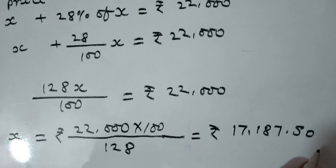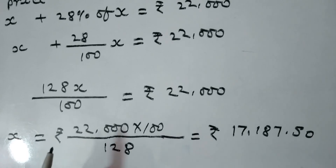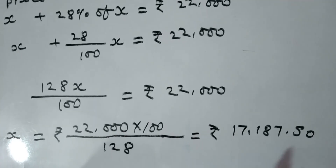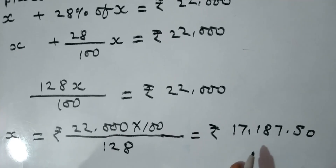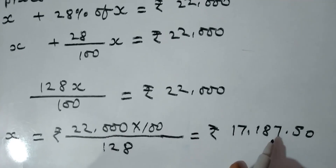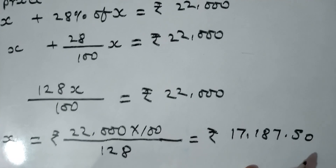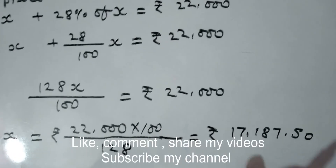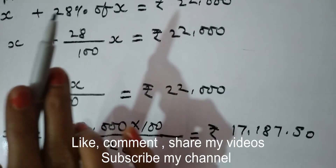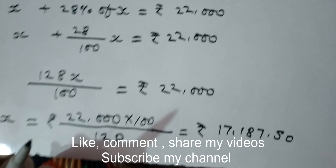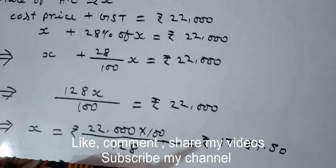So the cost price of the AC before GST came out to ₹17,187 and 50 paise. I hope you liked this video and understood everything.